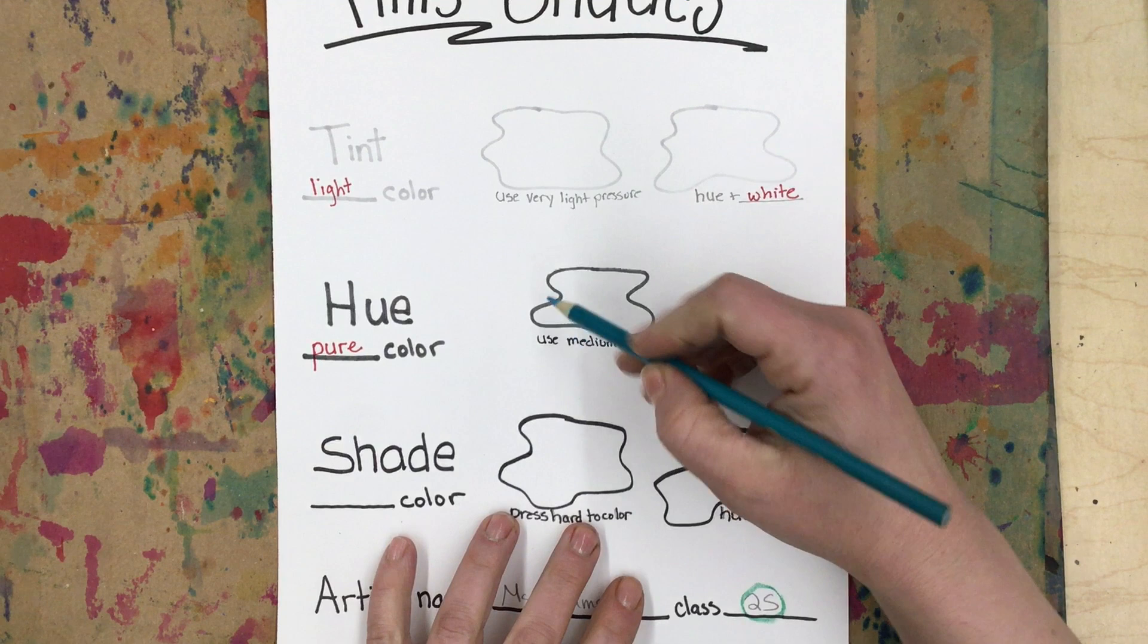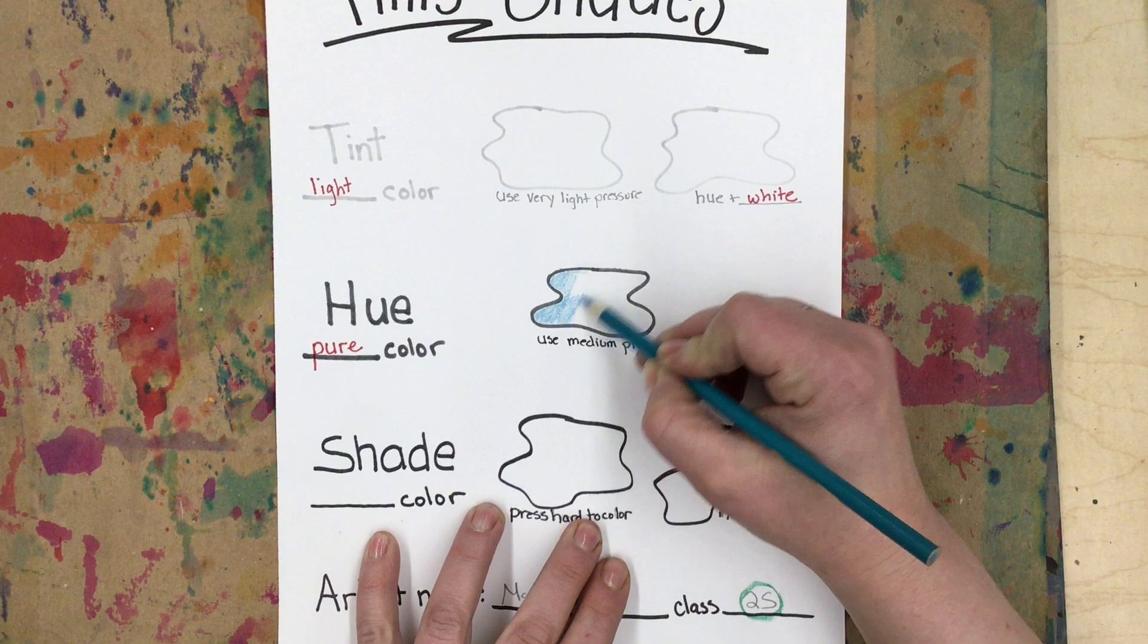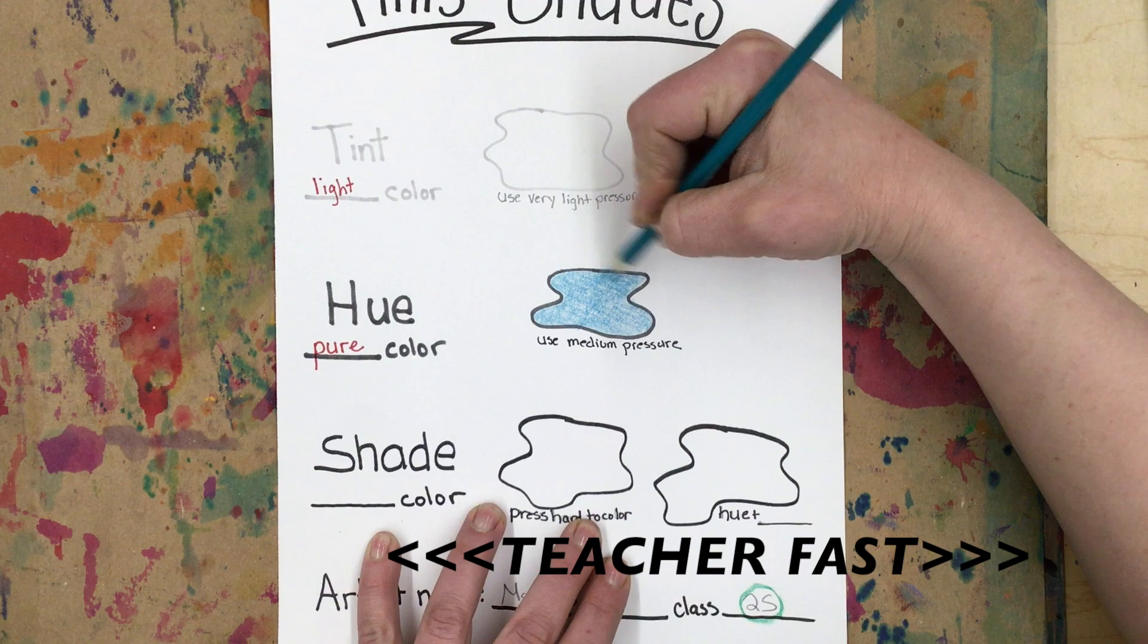To practice making a hue, choose a color, any color, and use medium pressure to neatly color in your spot. That means we're not pressing too hard, we're not pressing too lightly, we're somewhere in the middle. Remember to take your time. Use good craftsmanship. Definitely don't scribble. You want it to be smooth.